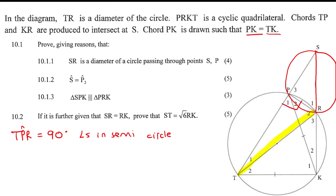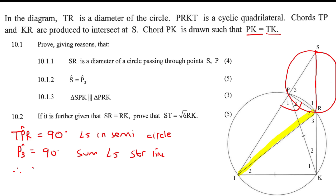So TPR is 90 degrees. Now this is a straight line, so it means that angle P3 must also be 90 because of angles on a straight line. And so therefore SR is the diameter — because we've shown this angle is 90, by the converse of angles in a semicircle.